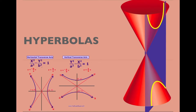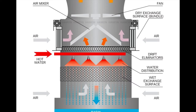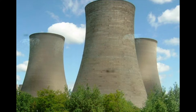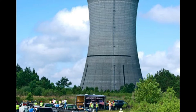Some buildings and structures are built in a hyperbolic shape for a number of different reasons. Cooling towers are structures which cool water to low temperatures and dismiss waste heat to the atmosphere. Their structure is a hyperboloid, which is better for the environment because the hyperbolic shape allows for less material use. The shape also allows convective airflow to move more quickly, which helps cooling be more productive.